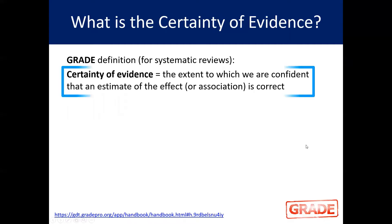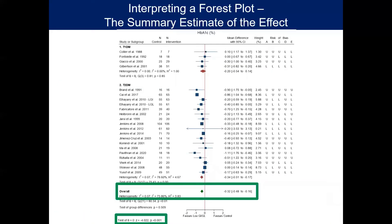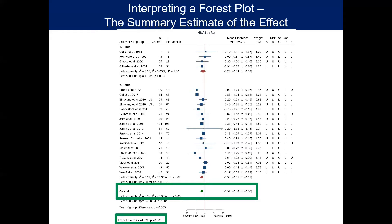GRADE is an assessment of the certainty of evidence — that is, the extent to which we are confident that an estimate of the effect or association is correct. The data extracted from individual studies is uploaded into a software program, which then meta-analyzes the data to provide an overall estimate of the effect of all included studies, which you can see at the bottom of the forest plot as the green diamond. This overall estimate of the pooled effect of the intervention compared to the control is where the conclusion of the SRMA comes from, and this is what we are applying the GRADE approach to.